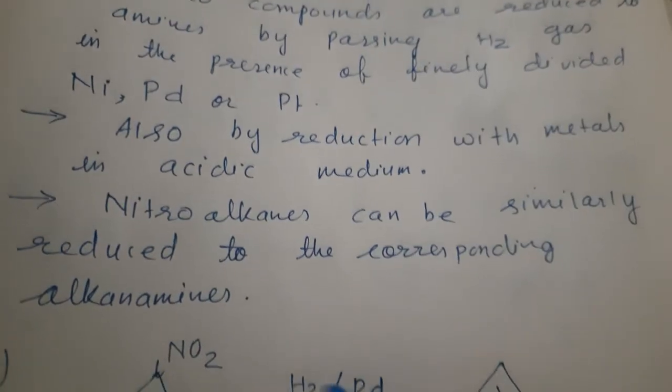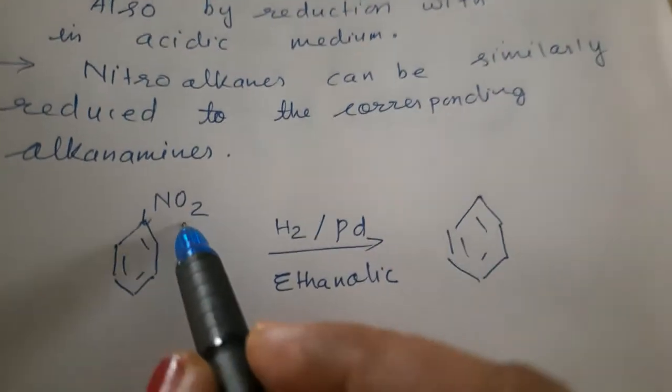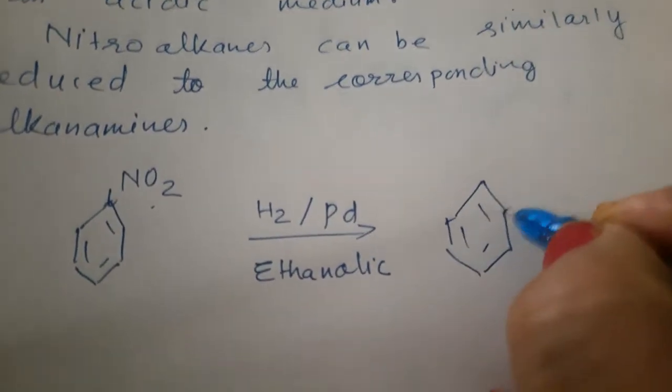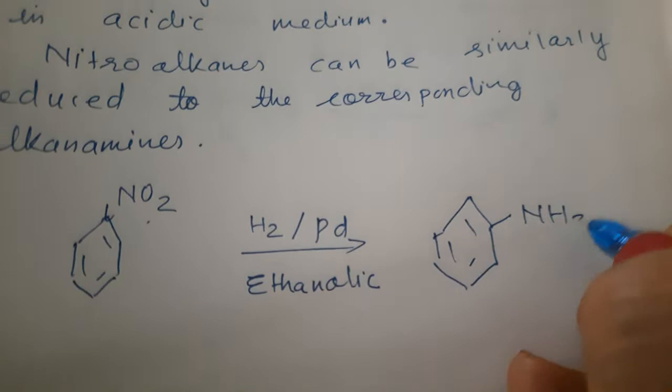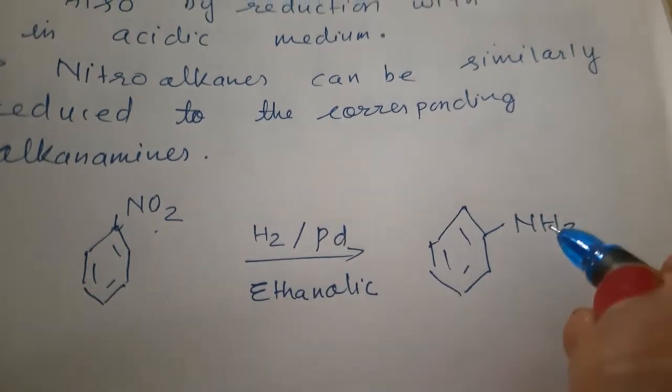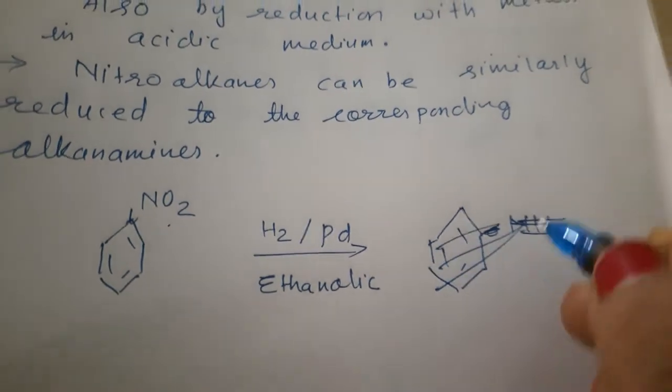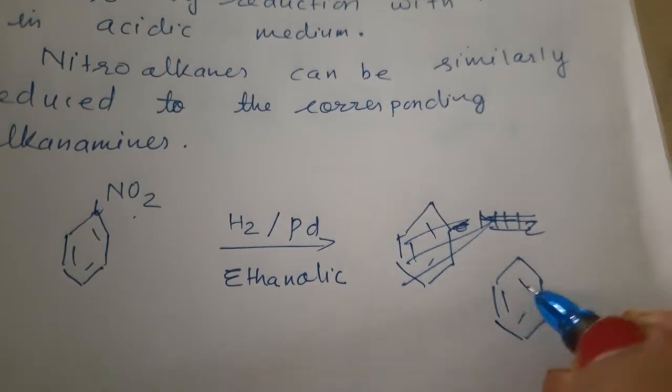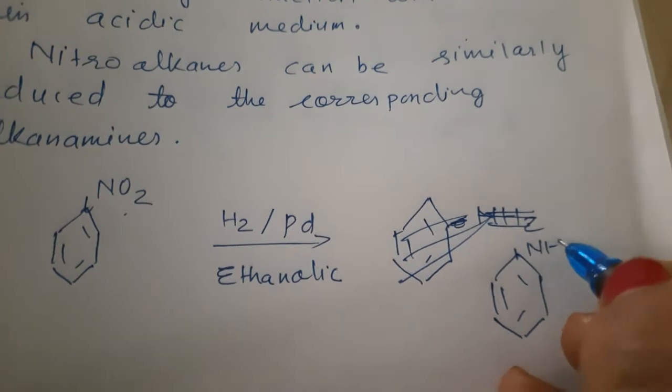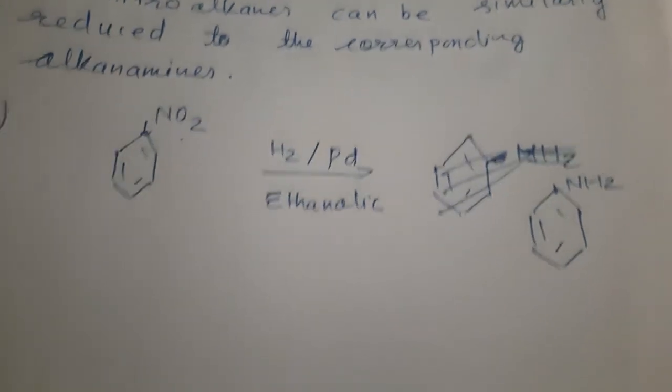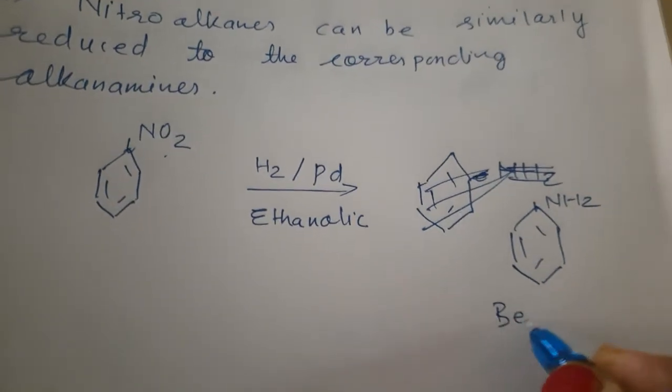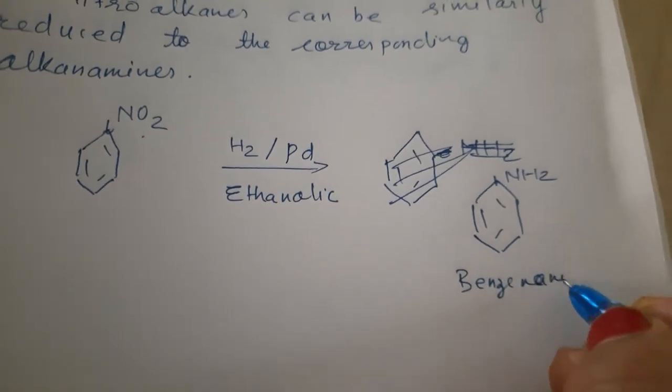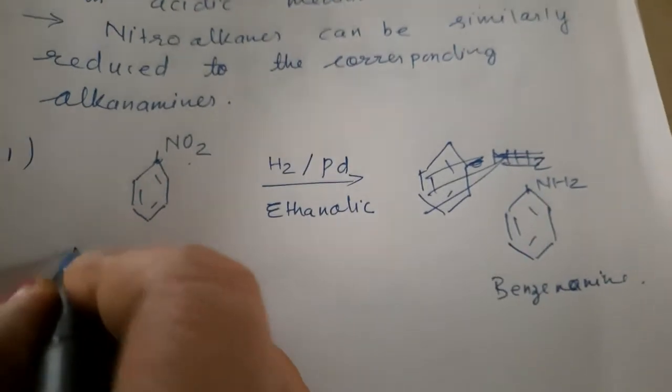This reduction is because Oxygen is removed and Hydrogen is added. So, Amine will be formed. In the position of Nitro, we will put NH2. This is Benzene Amine.